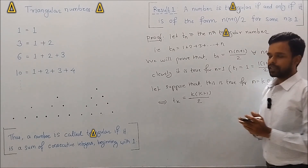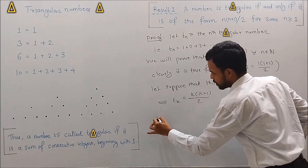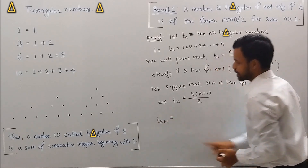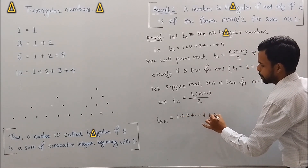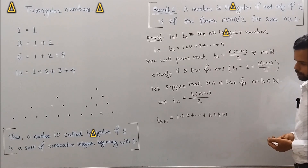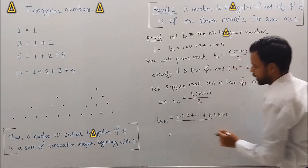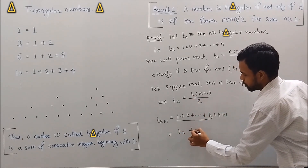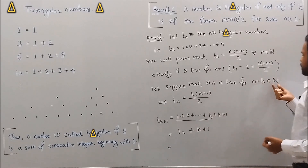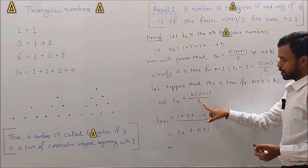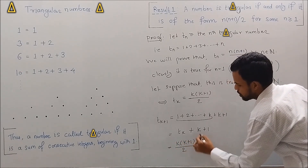Now we will prove that the result holds true for n = k+1. Consider T_{k+1}, the (k+1)th triangular number, which can be written as 1 + 2 + … + k + (k+1). This is nothing but T_k + (k+1). Since the result holds for n = k, T_k = k(k+1)/2, so T_{k+1} = k(k+1)/2 + (k+1).